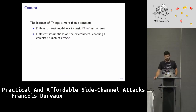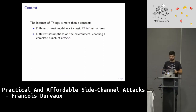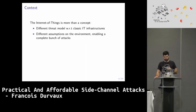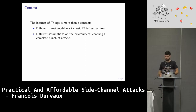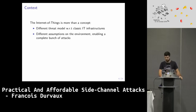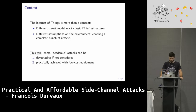In the context of side-channel attacks, with the Internet of Things, what is important is that the assumption that you control the environment of your device is no longer valid. You need to see things differently, and it opens the gate to a whole new bunch of attacks. It's not really new, but it's applicable now.